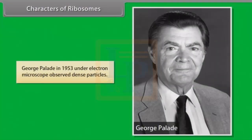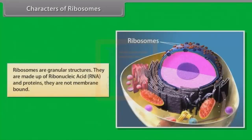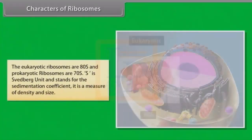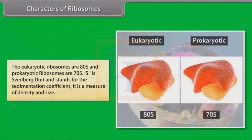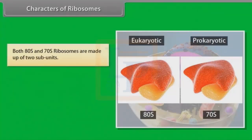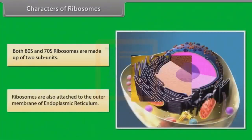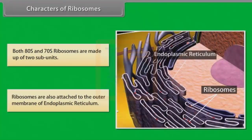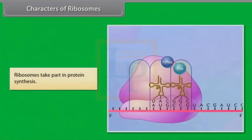George Palade in 1953 observed dense particles under the electron microscope. Ribosomes are granular structures made of ribonucleic acid (RNA) and proteins. They are not membrane-bound. The eukaryotic ribosomes are 80S and prokaryotic ribosomes are 70S, where S is the Svedberg unit and stands for the sedimentation coefficient — a measure of density and size. Both 80S and 70S ribosomes are made up of two subunits. Ribosomes are also attached to the outer membrane of the endoplasmic reticulum. Ribosomes take part in protein synthesis.